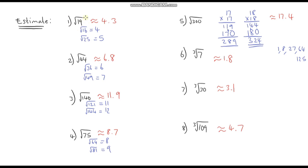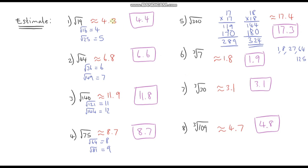Now I'm going to evaluate all of these using my calculator to see how close we got. As a bit of fun to finish: have a look at your estimations and see if any were exactly the same as the correct answer. My results: question 1 — 0.1 away; question 2 — 0.2 away; question 3 — 0.1 away; question 4 — exactly right to one decimal place; question 5 — 0.1 away; question 6 — 0.1 away; question 7 — exactly right; question 8 — 0.1 away. So all of mine were quite close; the furthest away was question 2, and I got two exactly correct. See if you can beat 2 out of 8 — and if you can, give yourself a pat on the back. I'll see you in the next video.